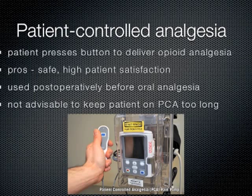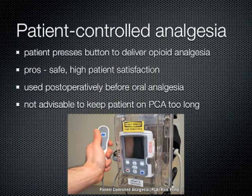PCA is a preset machine that allows a patient to press a button to deliver opioid analgesia in small boluses. The machine is very safe, and this type of analgesia has a high patient satisfaction rate, which is thought to be partially psychological. It is used postoperatively until the patient can tolerate oral analgesia. Specialists avoid keeping patients on a PCA too long because being hooked up to a machine can inhibit mobility and increase recovery time; they try to get the patient on oral medication as soon as possible.